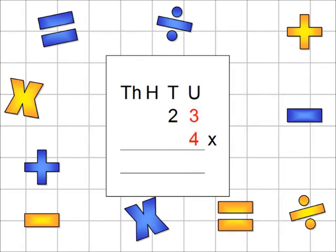Looking in the units column, you have 3 times 4, and the answer to that is 12. The units part of the 12 — the 2 — goes in the units column. The 10 part of the 12 goes above the tens column, above the big T, and will be used later on. You may see people carry numbers in slightly different ways, but the method is much the same. If you've used a different method for carrying in the past, then carry on using the method that you're more comfortable with.